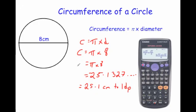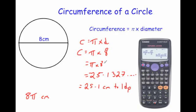If this is a non-calculator question, you may be asked to leave your answer in terms of pi. That means instead of computing pi times 8, you simply write 8 pi centimetres — just as you would write any algebraic multiplication.